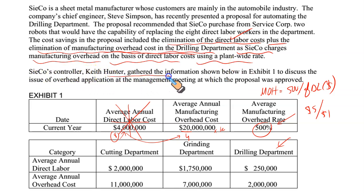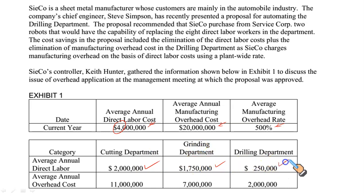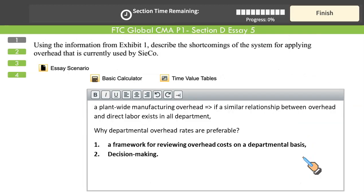SECO's controller Keith Hunter gathered the information shown in Exhibit 1 to discuss the issue of overhead application at the management meeting where the proposal was approved. The $4 million average labor cost is split into $2 million from cutting, $1.75 million from grinding, and $250,000 from drilling — the department being automated. Average annual overhead of $20 million is similarly split across the three departments.